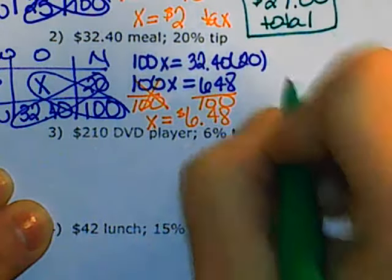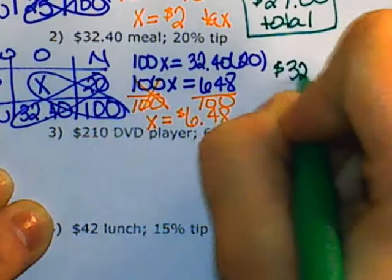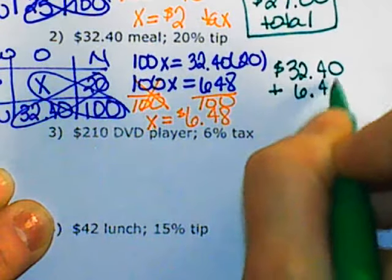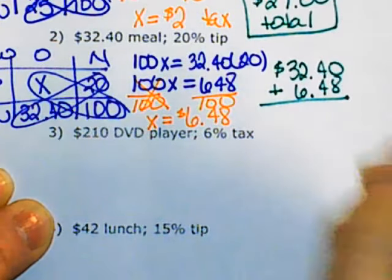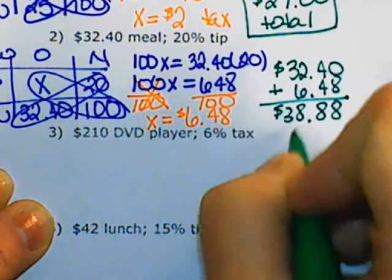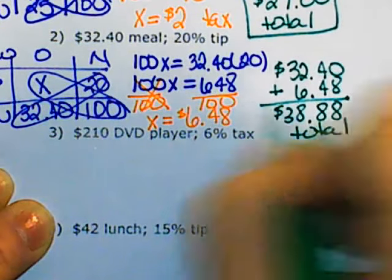To find the total cost, you take the original amount of $32.40, add the amount of tip, and we will be paying $38.88 total for a meal.